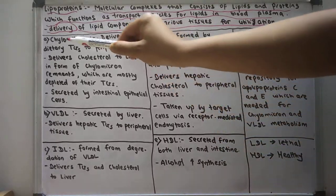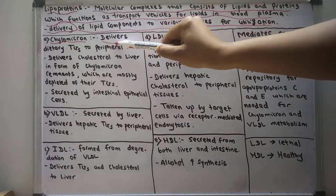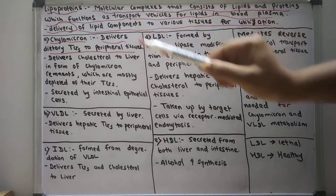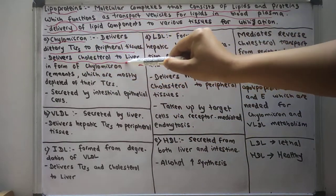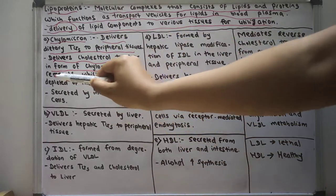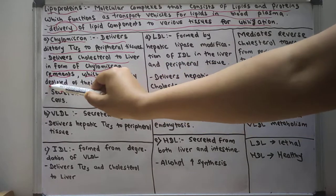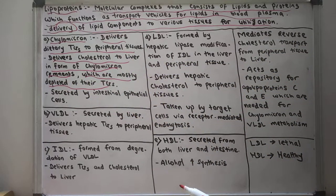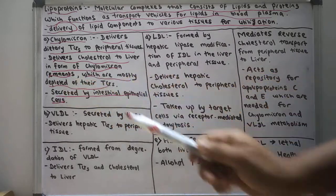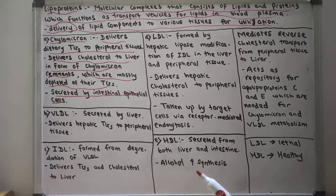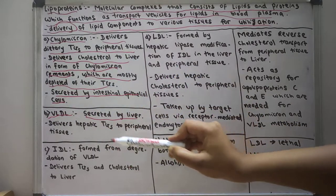First, let us talk about chylomicrons. Chylomicrons deliver dietary triglycerides to the peripheral tissues. They also deliver cholesterol to the liver in the form of chylomicron remnants, which are mostly depleted of their triglycerides. Chylomicrons are mainly secreted by the intestinal epithelial cells.